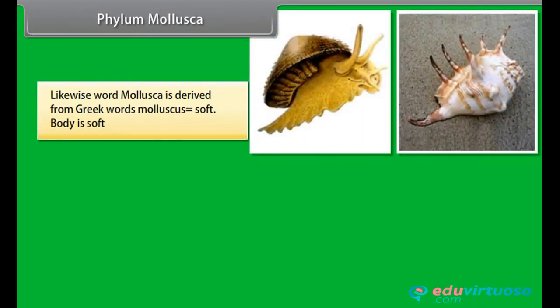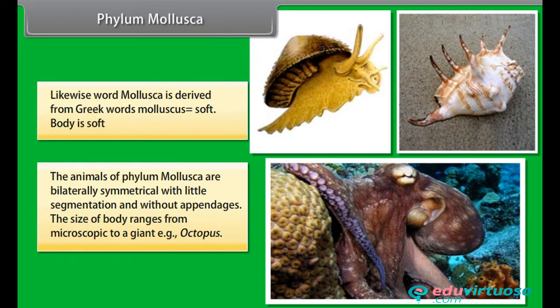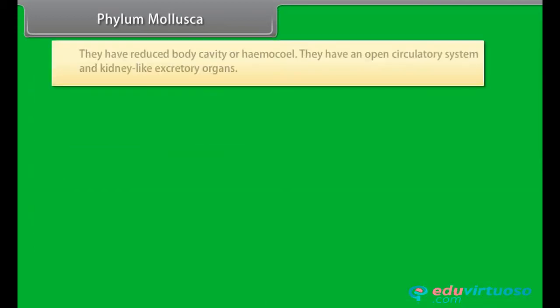Phylum Mollusca. The word Mollusca is derived from Greek word molluscas, meaning soft — body is soft. The animals of phylum Mollusca are bilaterally symmetrical with little segmentation and without appendages. The size of body ranges from microscopic to a giant, that is octopus. They have a reduced body cavity, or haemocoel.